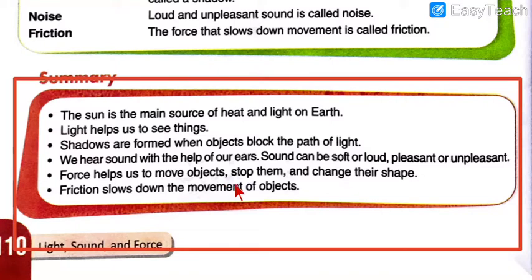Force helps us to move objects, stop them, and change their shape. Force can stop an object, move it from one place to another, or even change its shape. Friction slows down the movement of objects — because of friction the movement becomes slower. I hope these summary points are clear enough for you to now solve the objectives.